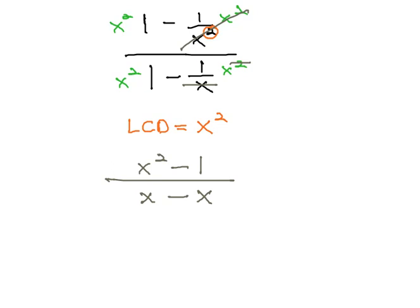While there's no like terms to combine, we always want to check to see if this reduces. We can reduce a rational expression by first factoring... whoops, I think I lost my squared. x squared times 1 is x squared. There we go.